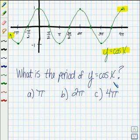What do you think is going to be the period of y equals the cosine of x? Make your choice from A, B, or C at the bottom of the screen.